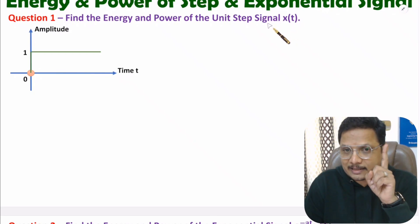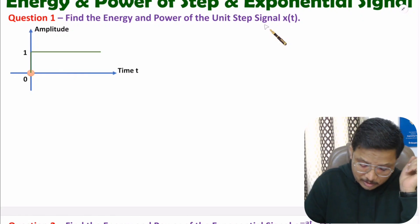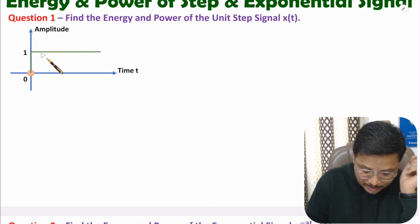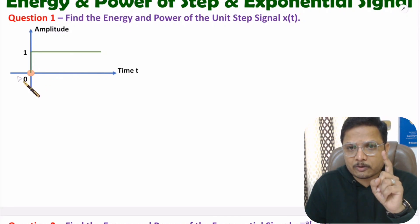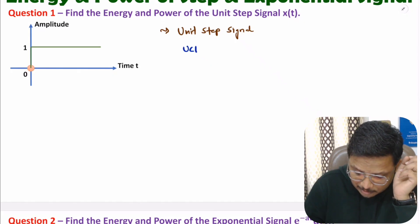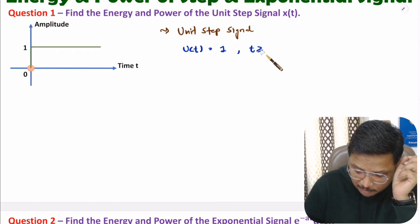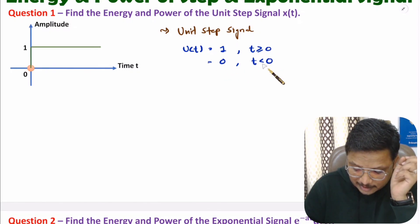The unit step signal has magnitude one for t greater than or equal to zero, and zero magnitude for t less than zero. So first of all, we need to note down the given signal in terms of function. For unit step signal, we have value one for t greater than or equal to zero, and value zero for t less than zero.